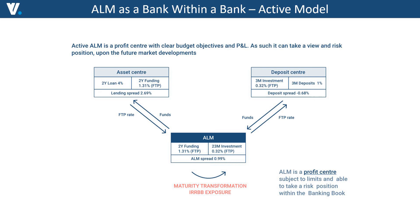Coming back to the previous slide, we can see a very important point: at this stage, the business units are completely immune to exposure to liquidity and interest rate risk. All exposure has been transferred from the business units to the central unit acting as a bank within a bank — the ALM. It is ALM which needs to manage all financial risk exposure, including not only IRRBB exposure in terms of repricing risk or yield risk, but also extreme effects risk and basis risk — all those things which need to be managed by the ALM department.